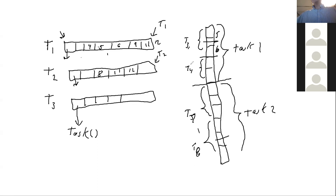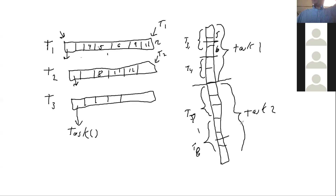Instead of doing a sort, suppose I want to sum this array. How do I sum an array? Find the sum of the left half, find the sum of the right half, and add the two numbers — that's the whole algorithm. How do you find the sum of the left half? Take the left half, divide it into two halves, find the sum of each half, add the two answers and return them to the person who called you. Recursion makes it real easy to describe an algorithm, and it keeps chopping the algorithm into smaller and smaller pieces.